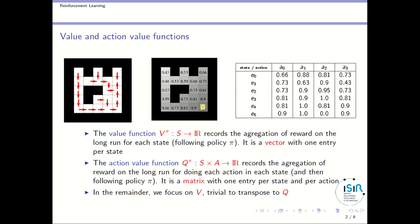A different notion from the value function is the action value function. It is very similar, but instead of having just one value per state, you have one value per state-action pair. For instance, if you are in state S0, doing action A0 might be worth one value, A1 might be worth another value, etc. This is the value of performing a particular action in a particular state and then following policy pi. The value function is a vector with one value per state, whereas the action value function is a matrix giving one value per state-action pair.